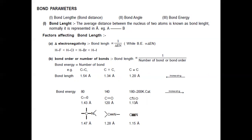Bond order: bond length is inversely proportional to number of bonds (bond order), while bond energy is directly proportional to number of bonds. Considering carbon-carbon single, double, and triple bonds — as the number of bonds increases, bond energy increases while bond length decreases.